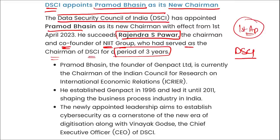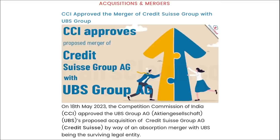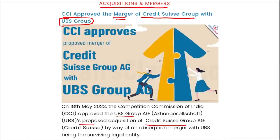DSCI is a not-for-profit industry body on data protection in India, established by NASSCOM. In acquisitions and mergers, CCI has approved the merger of Credit Suisse Group with UBS Group. The Competition Commission of India approved UBS Group's proposed acquisition of Credit Suisse Group by way of an absorption merger, with UBS being the surviving legal entity.